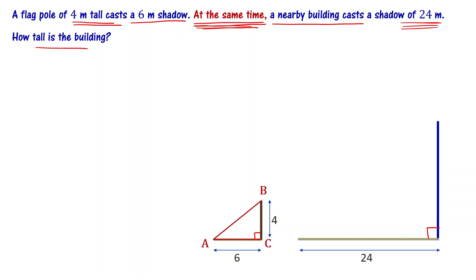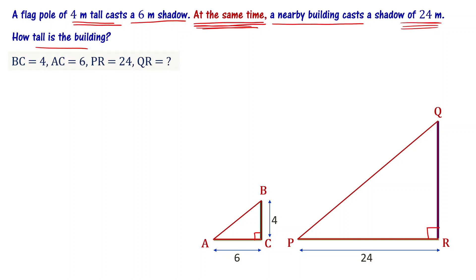When you draw a triangle, it becomes like this. The first one I am calling triangle ABC and the second one I am calling triangle PQR. BC is the height of the pole — 4 meters. AC is the shadow length of the pole — 6 meters. PR is the shadow length of the building — 24 meters. QR is the height of the building.